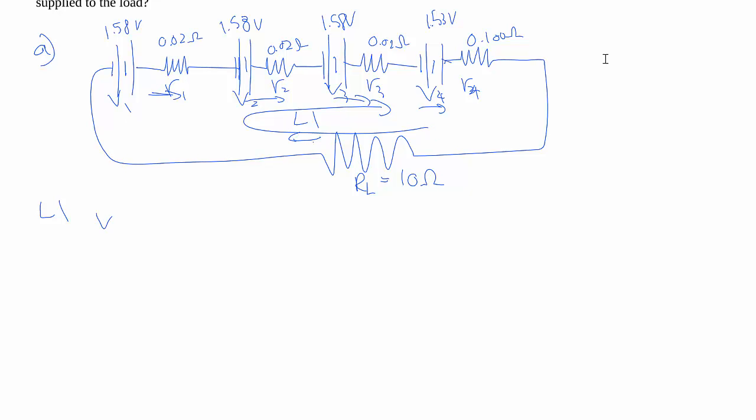So as we go through the loop, we have V1 minus IR1 plus V2 minus IR2 plus V3 minus IR3 plus V4 minus IR4, and then minus I times the big load resistance.